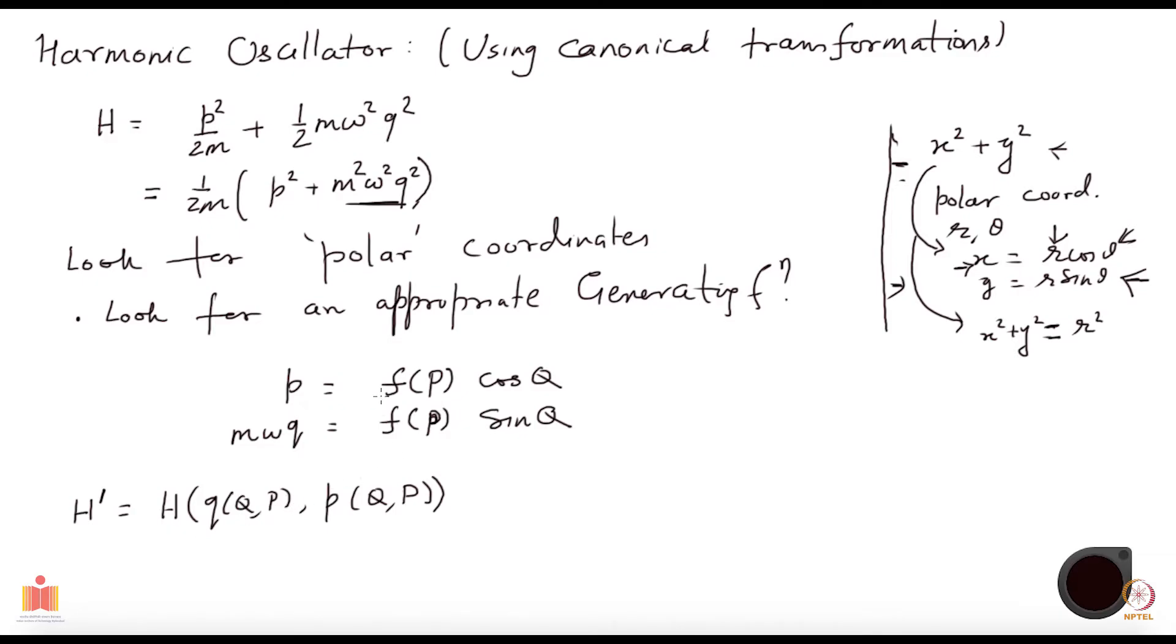By construction, I am choosing polar coordinates. So when I look at this sum of squares, it will be left only with the P coordinate, capital P, and the angular coordinate Q would disappear. What you will get here is 1 by 2m, and you substitute p and q from here to there, and you get f of P whole squared.